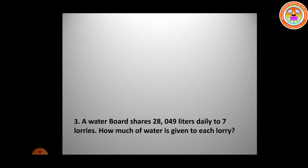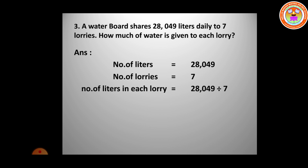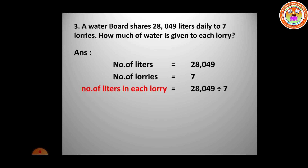A water board shares 28,049 litres daily to 7 lorries. How much water is given to each lorry? Total litres = 28,049, number of lorries = 7. Dividing 28,049 by 7, we get the quotient 4,007. The number of litres in each lorry is 4,007 litres.